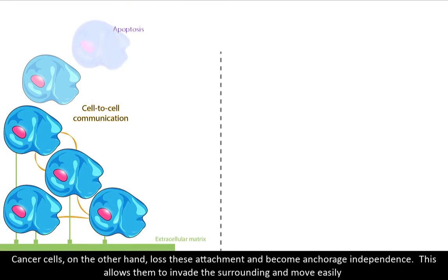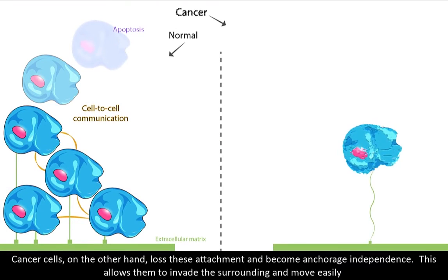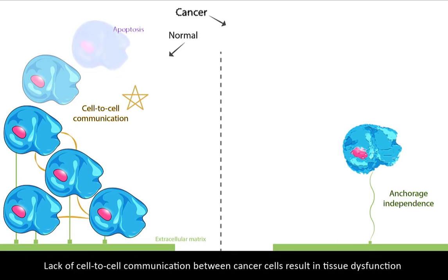Cancer cells, on the other hand, lose this attachment and become anchorage independent. This allows them to invade the surroundings and move easily. Lack of cell-to-cell communication between cancer cells results in tissue dysfunction.